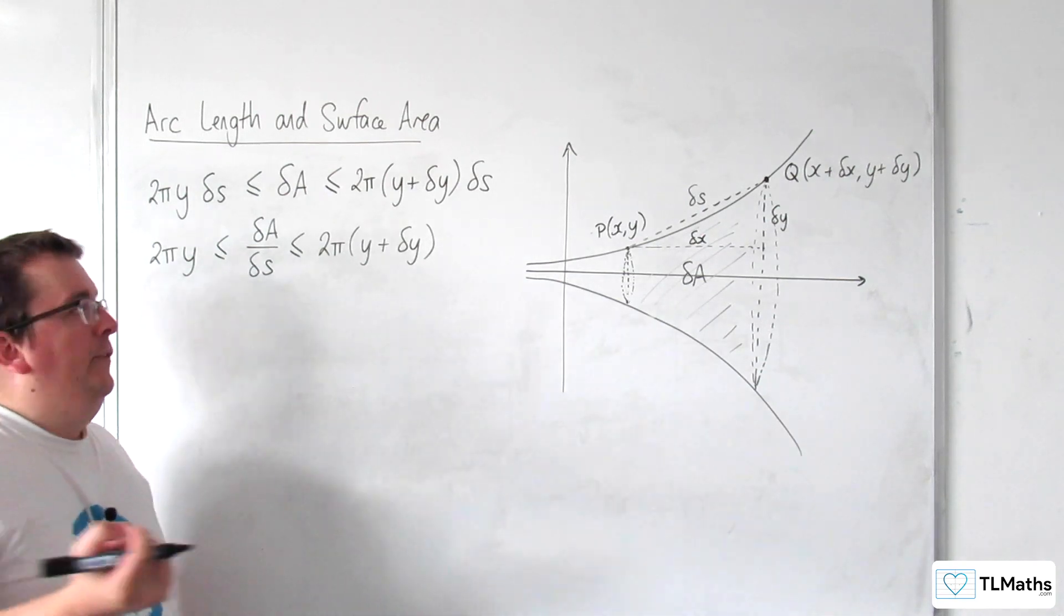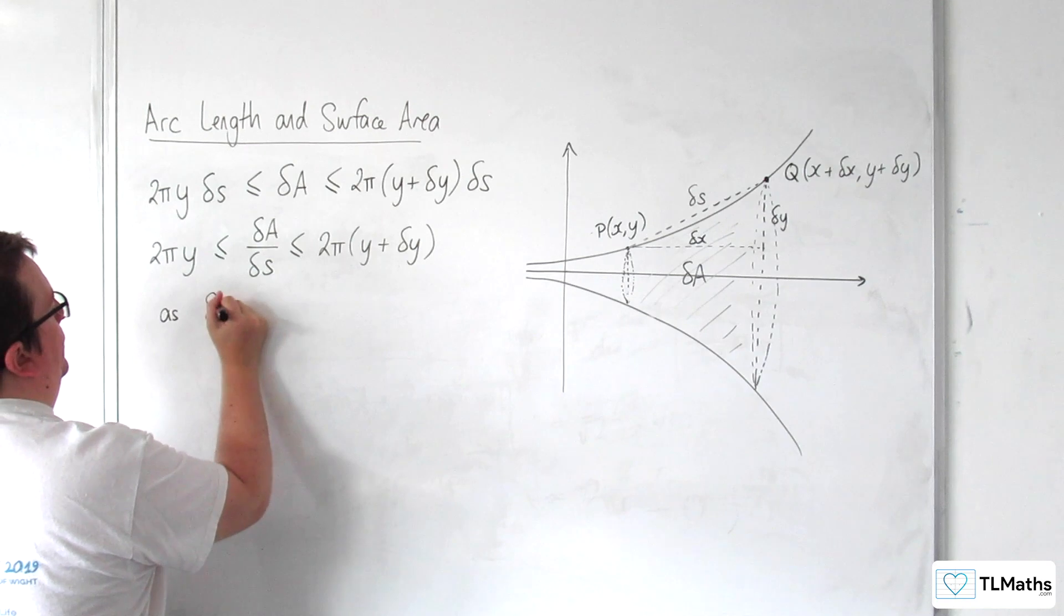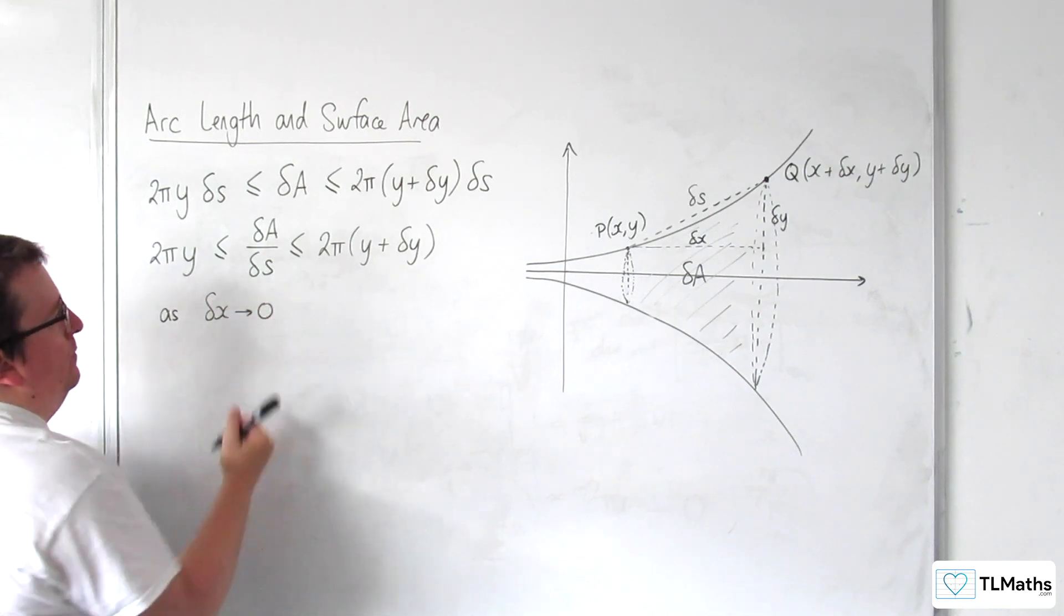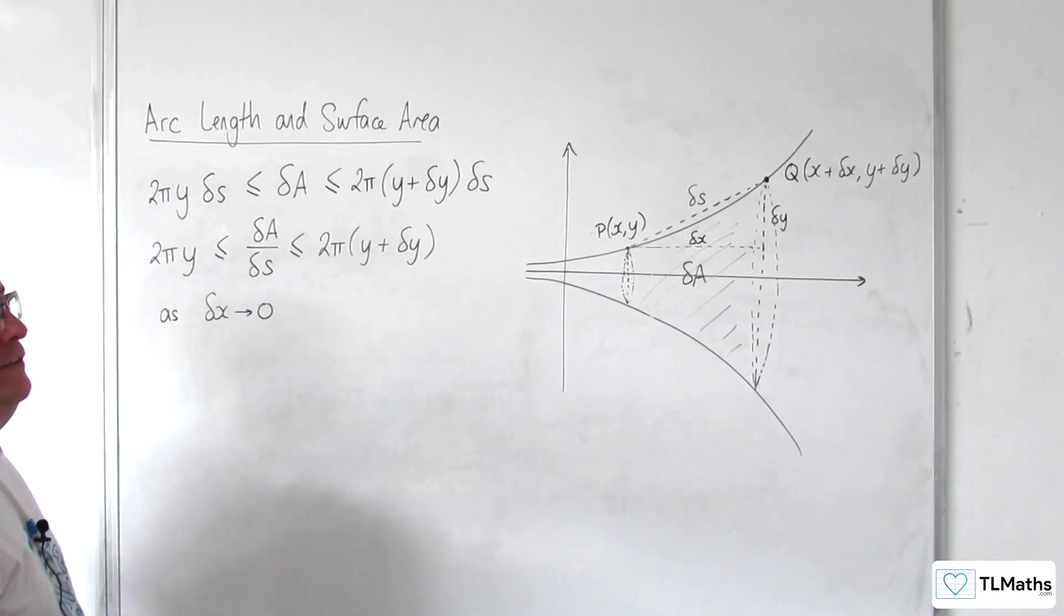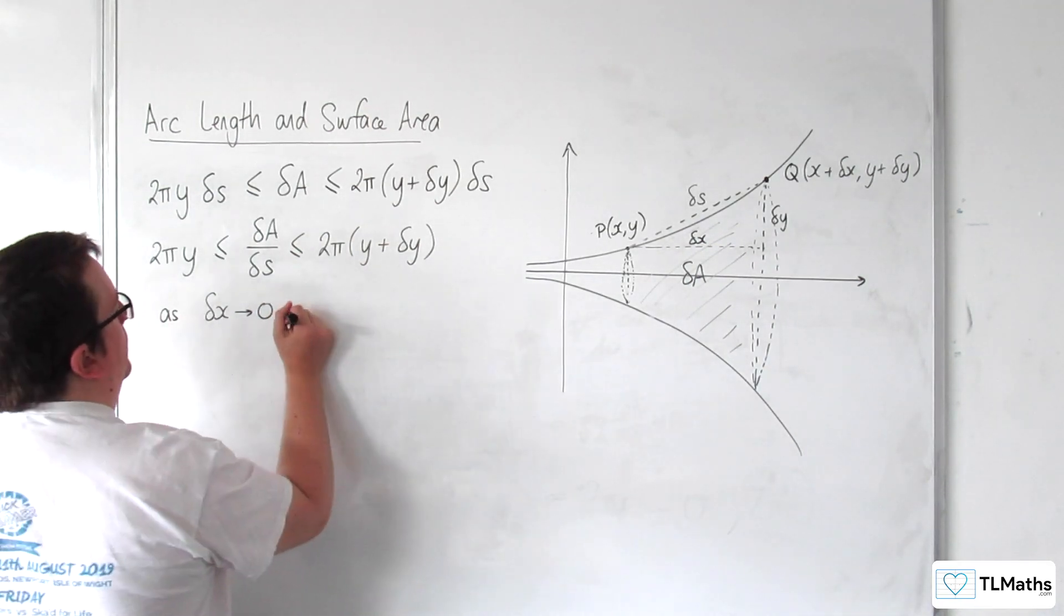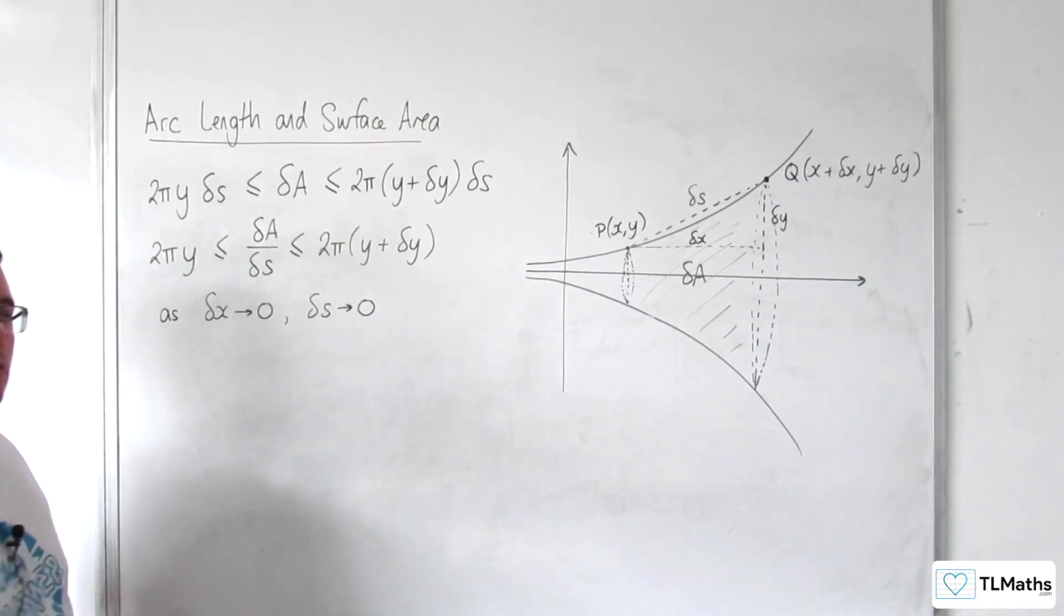Now as delta x tends to 0, so as this shrinks, what we would be expecting to find is that delta S tends to 0 also, and we would also have that delta y tends to 0.